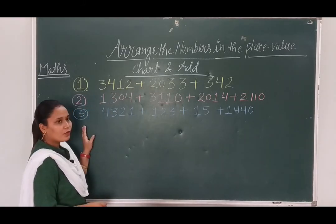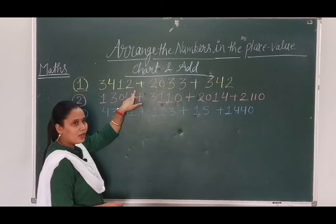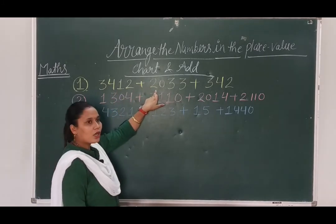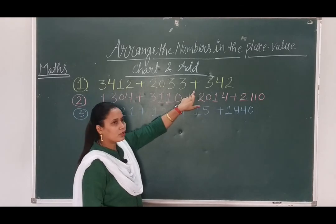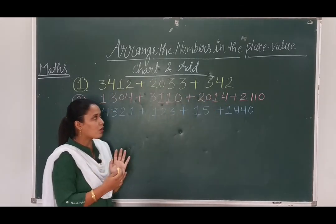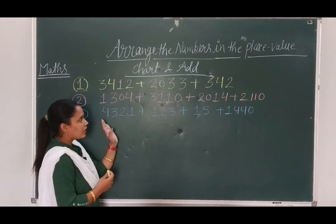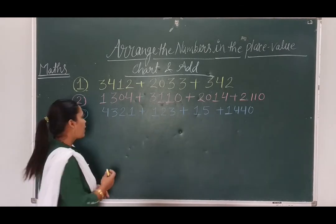Yes, my question number 1 is 3412 plus 2033 plus 342. So, first how we will solve this question? First, we have to arrange these digits in place value chart.